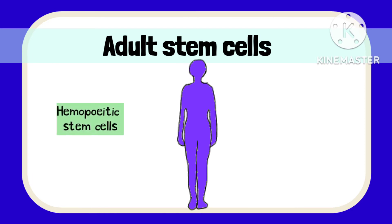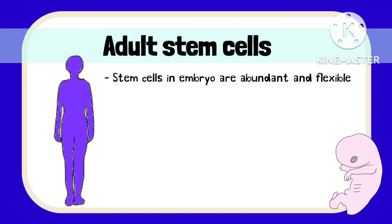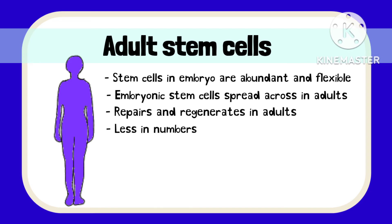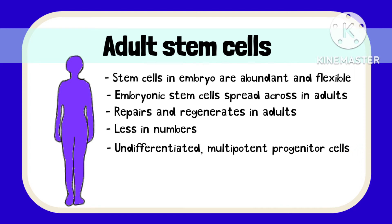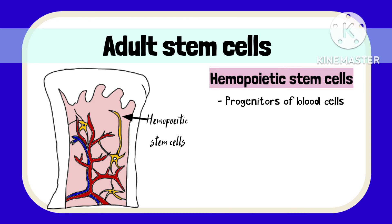Adult stem cells are further divided into hematopoietic stem cells and bone marrow stromal cells. Even though stem cells in the embryo are abundant and more flexible, they do not disappear as the person grows but rather spread across the body and play the role of repairing and regenerating tissues. Adult stem cells are undifferentiated multipotent progenitor cells. Hematopoietic stem cells are progenitors of blood cells and produce and replenish RBCs, WBCs, and platelets throughout our lifespan.